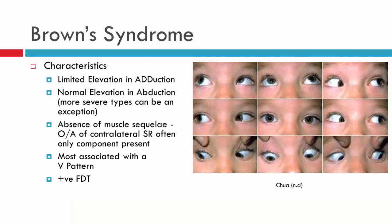As mentioned earlier in the previous video, we're expecting to see limited elevation in adduction. Looking at this child in levoversion, we have limited elevation in adduction of the right eye — a right Brown syndrome. We also see normal elevation in abduction. The limitation of elevation is usually restricted to adduction.